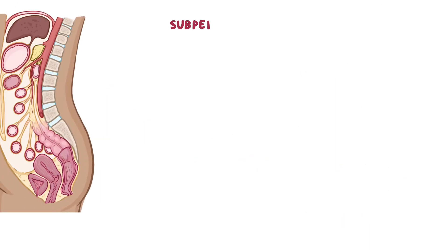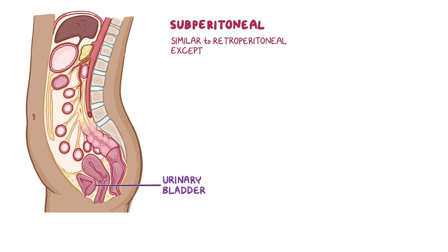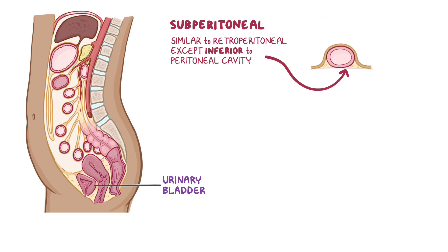Lastly, the subperitoneal organs, like the urinary bladder, are similar to the retroperitoneal organs except they are located inferior to the peritoneal cavity rather than posterior to it.